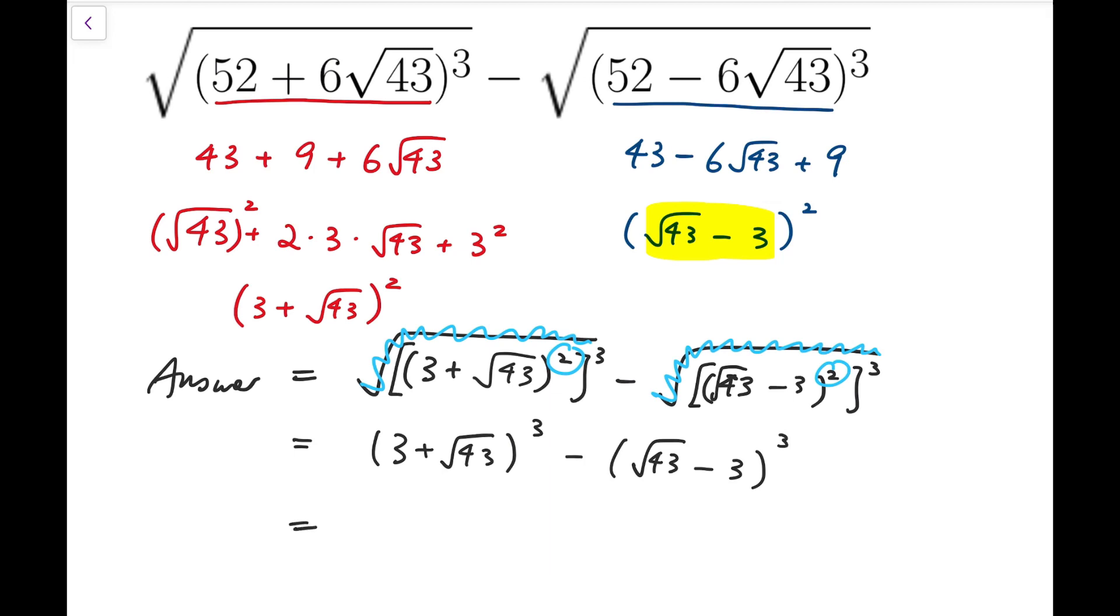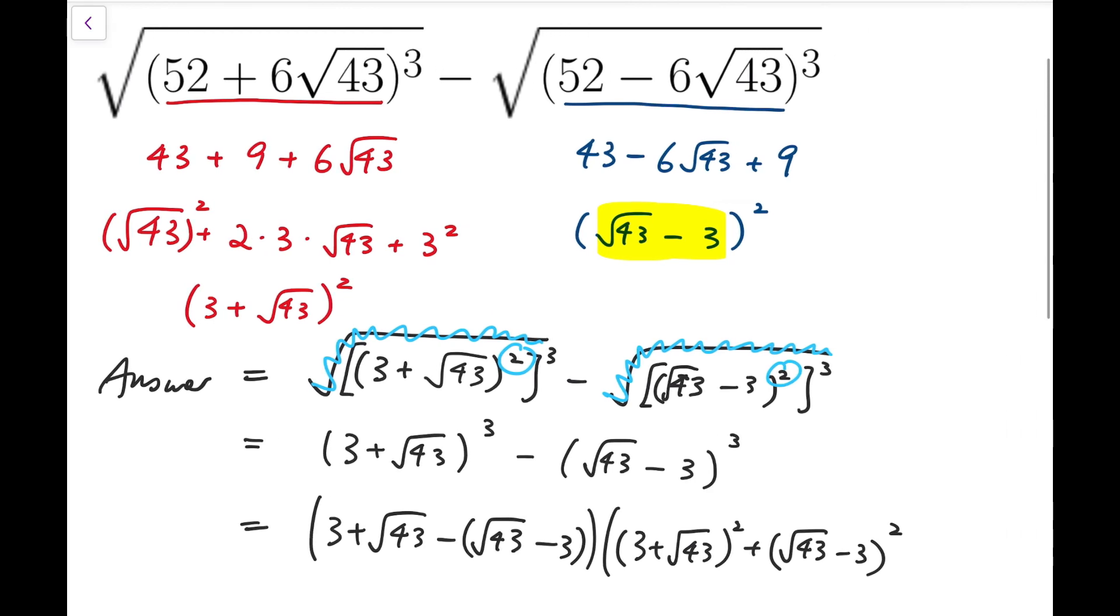And so what remains is simply 3 plus root 43 all cubed minus root 43 minus 3 all cubed. Now, we can recall the identity of the difference of cubes and say that it is the difference of the basis, and then we follow the identity, sum of squares, and adding the product.